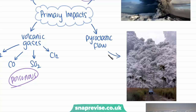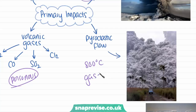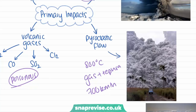Lastly, among the primary impacts, we have pyroclastic flow. This is a very hot flow — over 800 degrees Celsius — and it's made up of gas and tephra combined. It moves very, very quickly, at about 700 kilometres an hour. You would not want to be in the vicinity of a volcanic eruption if pyroclastic flow was taking place, because it's likely that you would not survive it.